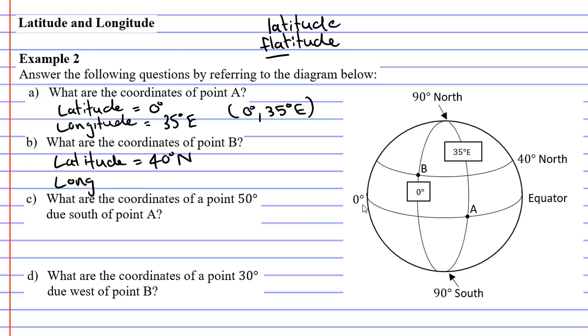And then our longitude is like our vertical line. So our longitude goes up and down. And you'll notice the longitude is 0 degrees. So we go latitude first, 40 degrees north first, longitude last, 0 degrees.